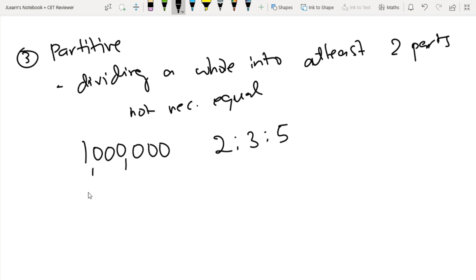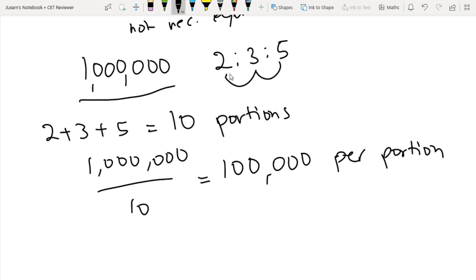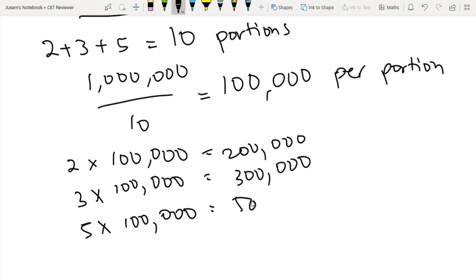How do we do this? We add these three numbers together. So you have 2 plus 3 plus 5, which equals 10. Technically, we call this portions. So you have 10 portions. Then we divide the whole value into portions. So you have 1 million divided by 10 portions, which is 100,000 per portion. You want to divide into 2 portions, 3 portions, and 5 portions. So just multiply them to each portion. That is 2 times 100,000, 3 times 100,000, and 5 times 100,000, which equals 200,000, 300,000, and 500,000.